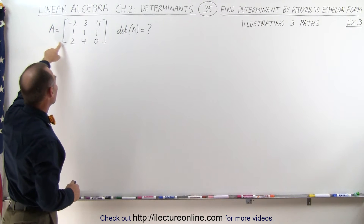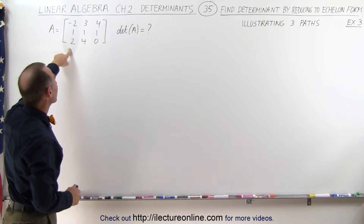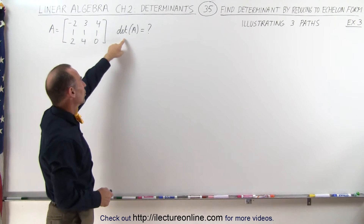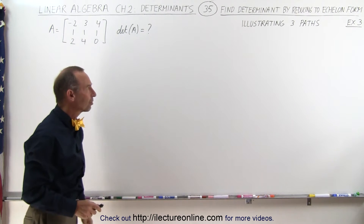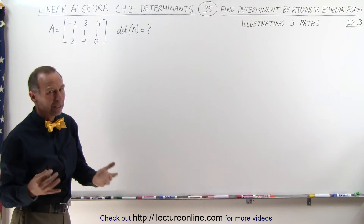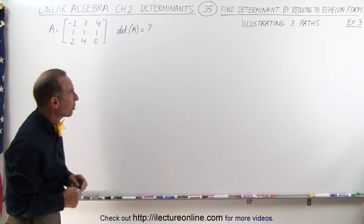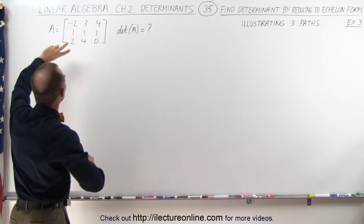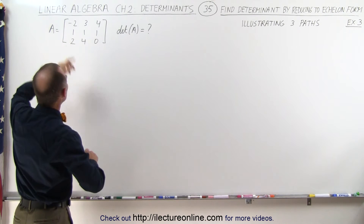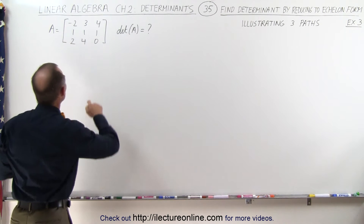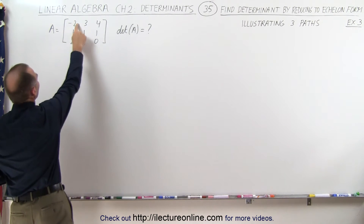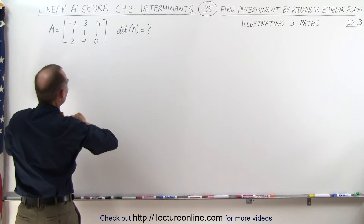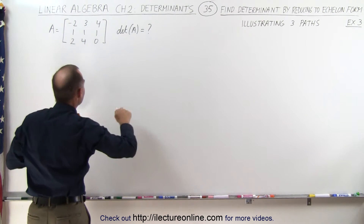Here's matrix A. It's a 3×3 matrix and we're trying to find the determinant of that matrix. We're going to illustrate three different paths. First, what we're going to do is interchange row 1 and row 2 to get a 1 in the upper left corner. We're going to do that for all three cases.